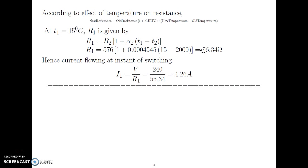Once we calculate this resistance at room temperature, we can find the current at the instant of switching. According to Ohm's law, I1 equals V upon R1 equals 240 divided by 56.34, which gives 2.26 Ampere. This is the current flowing at the instant of switching the 100 Watt lamp on the 240 volt DC supply.